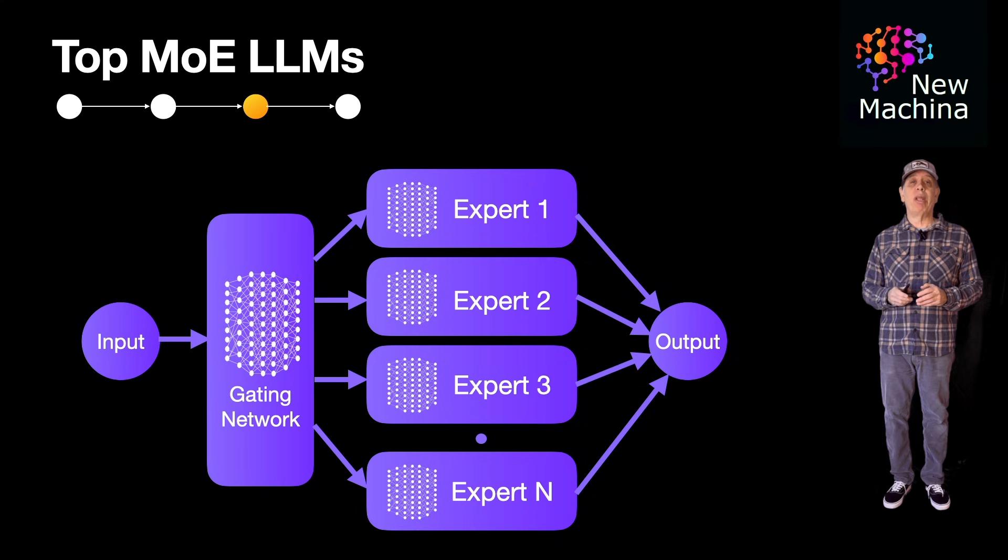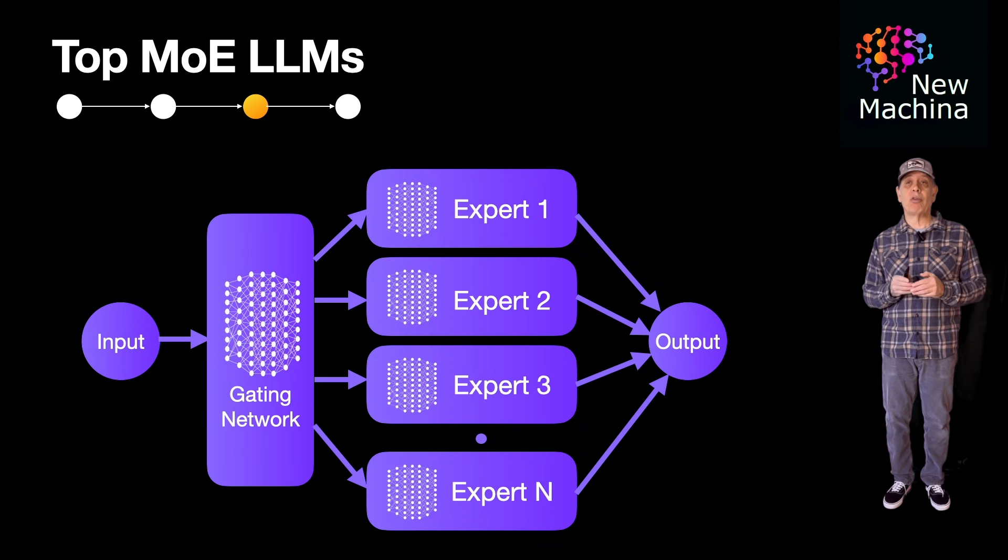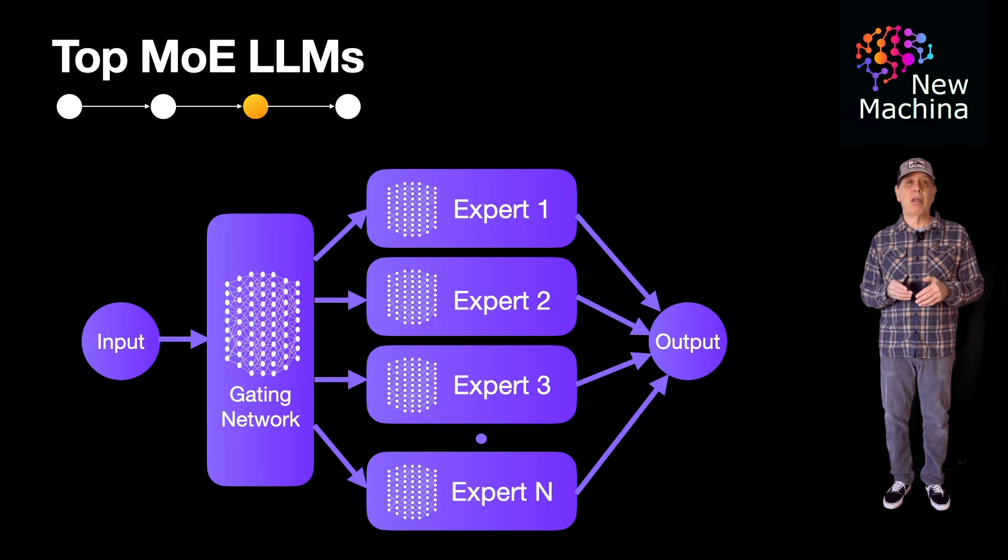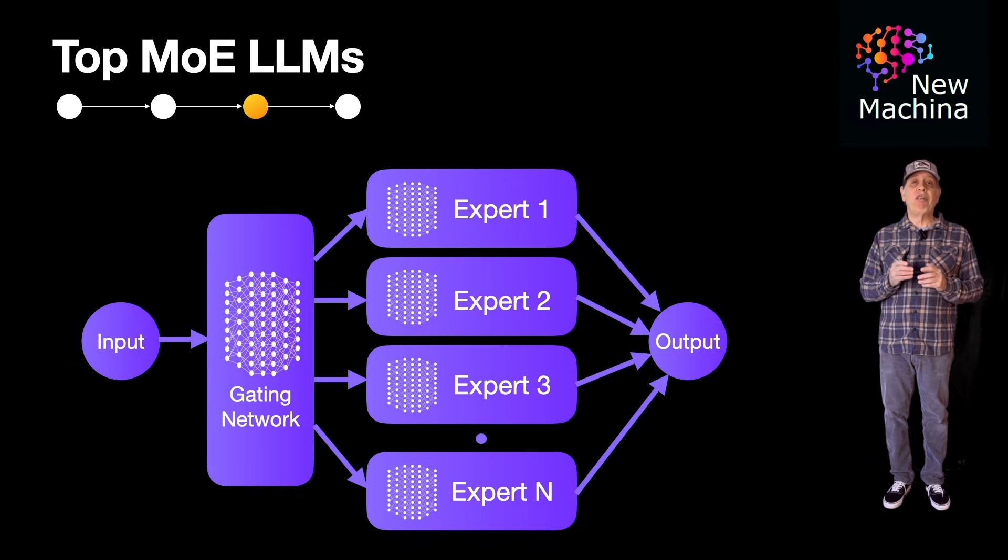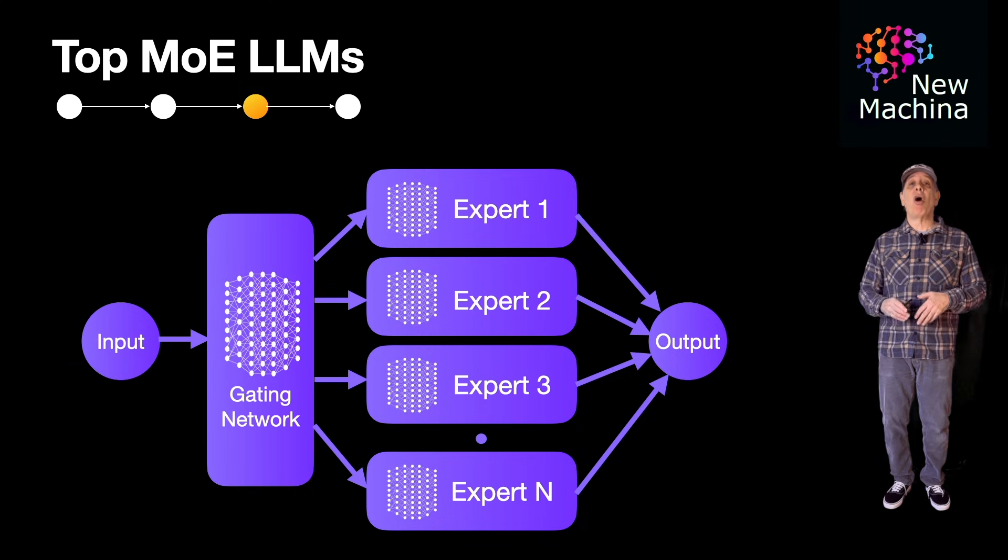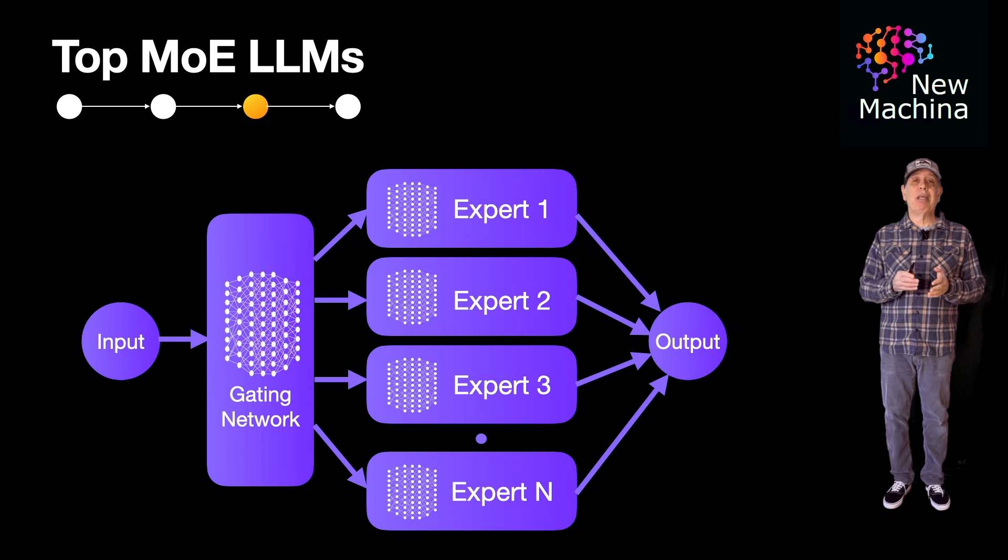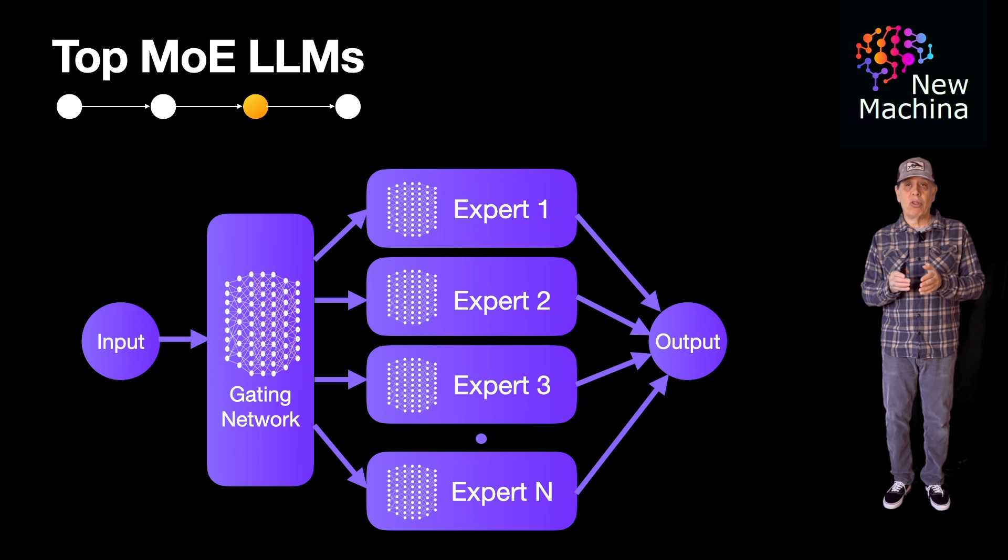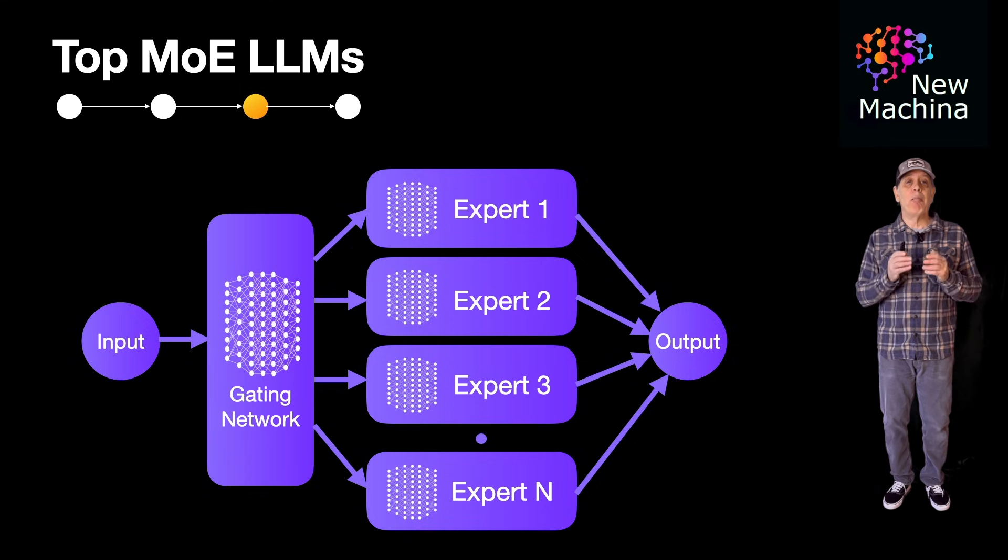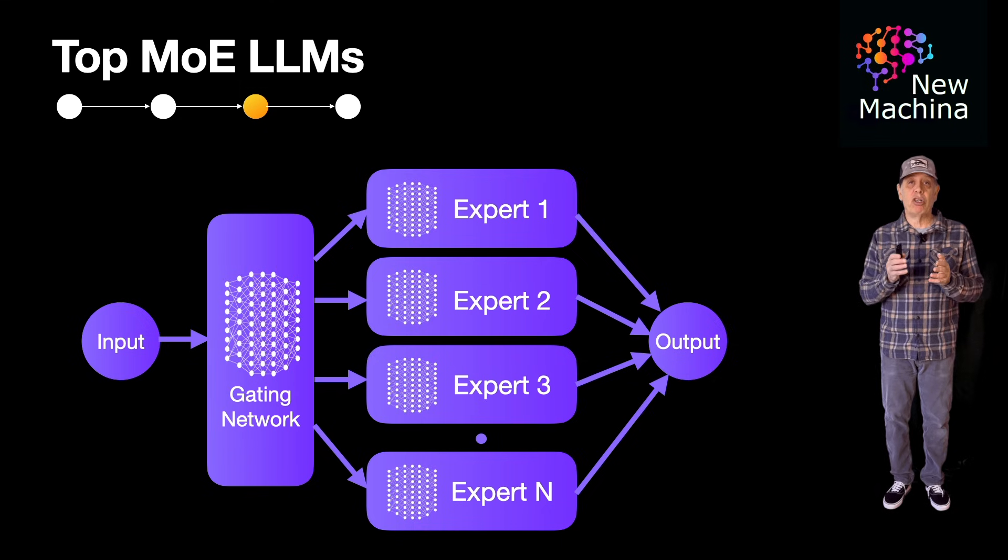So in summary, mixture of experts, or MoE for short, is a type of machine learning architecture that leverages multiple specialized submodels, also known as experts, to handle different parts of the input data. Instead of having one single model process all the input data, MoE uses a gating mechanism to dynamically select the most relevant experts for a given input, making it a sparse and efficient approach.